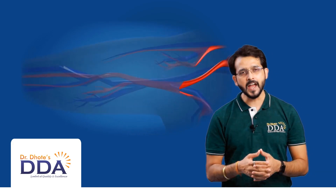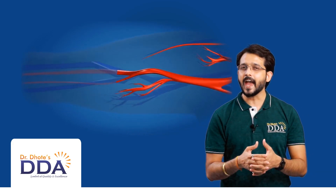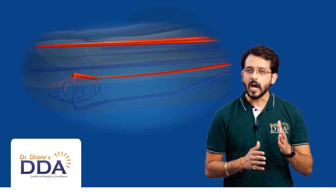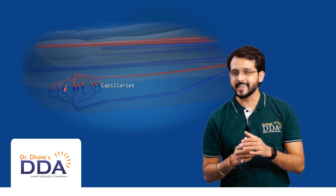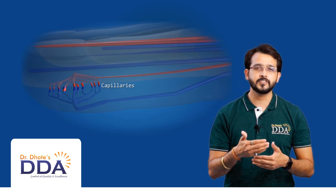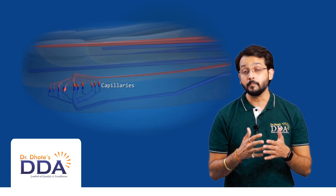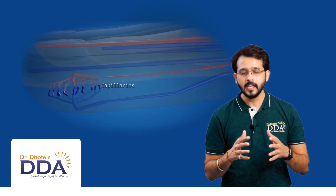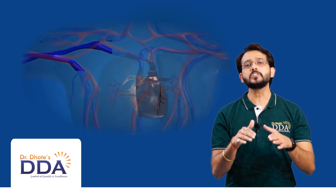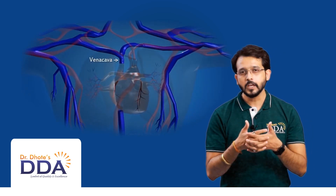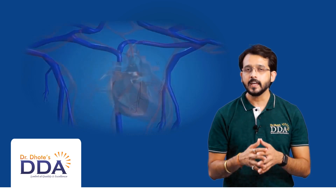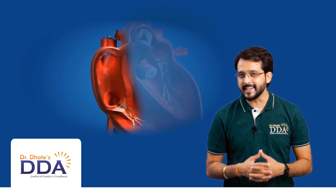The aorta branches into arteries, which carry oxygenated blood to different body parts except the lungs. Arteries branch into capillaries, which facilitate easy exchange of materials, and the blood becomes deoxygenated. Capillaries unite to form veins, and veins unite to form the vena cava, which pours deoxygenated blood into the relaxed right atrium.